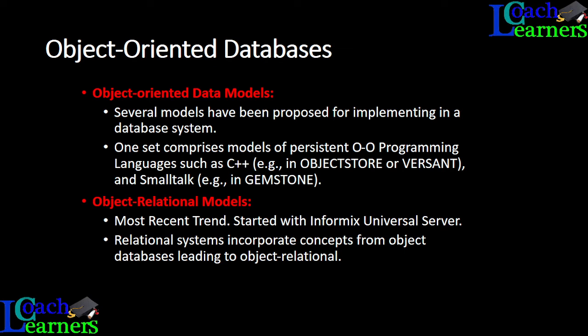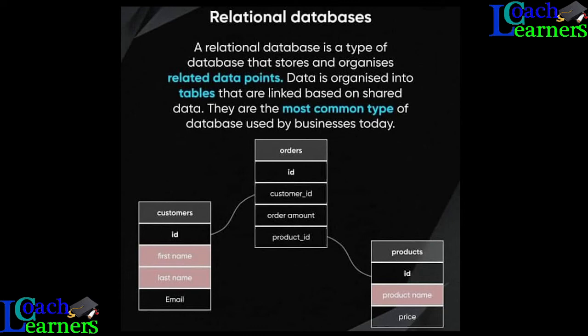Then we have relational databases, which we need to be familiar with because most databases use this form. A relational database stores and organizes data in related data points, organized into tables — referred to as entities — that are linked to related data. As you can see in this diagram, we have three entities: customer, orders, and products, that have relationships. Each entity comprises attributes.